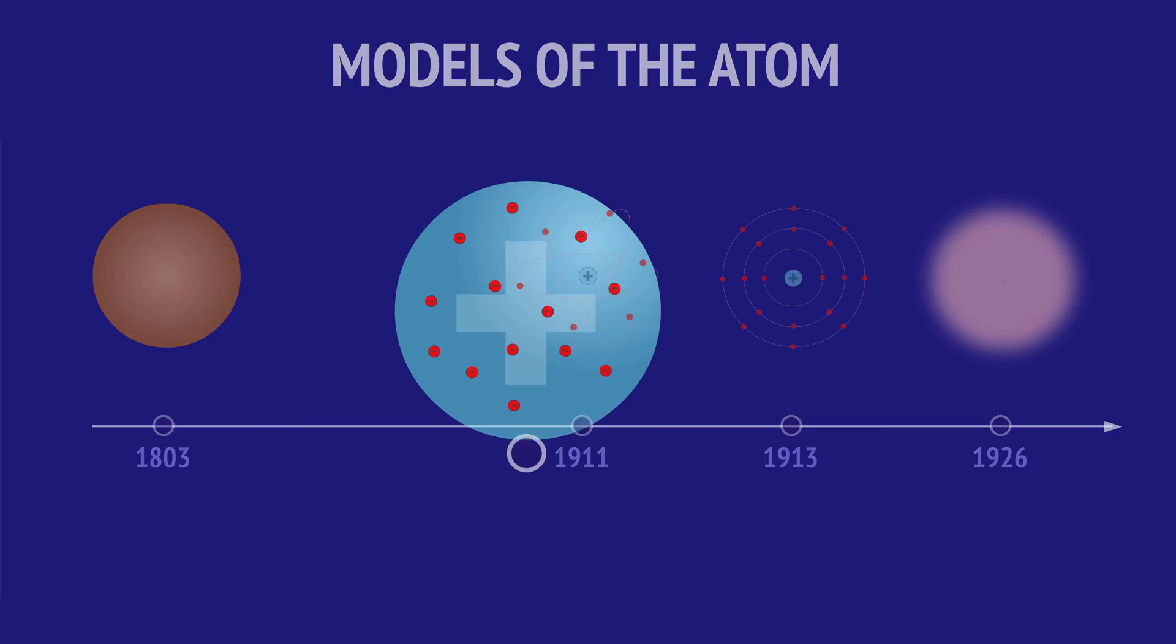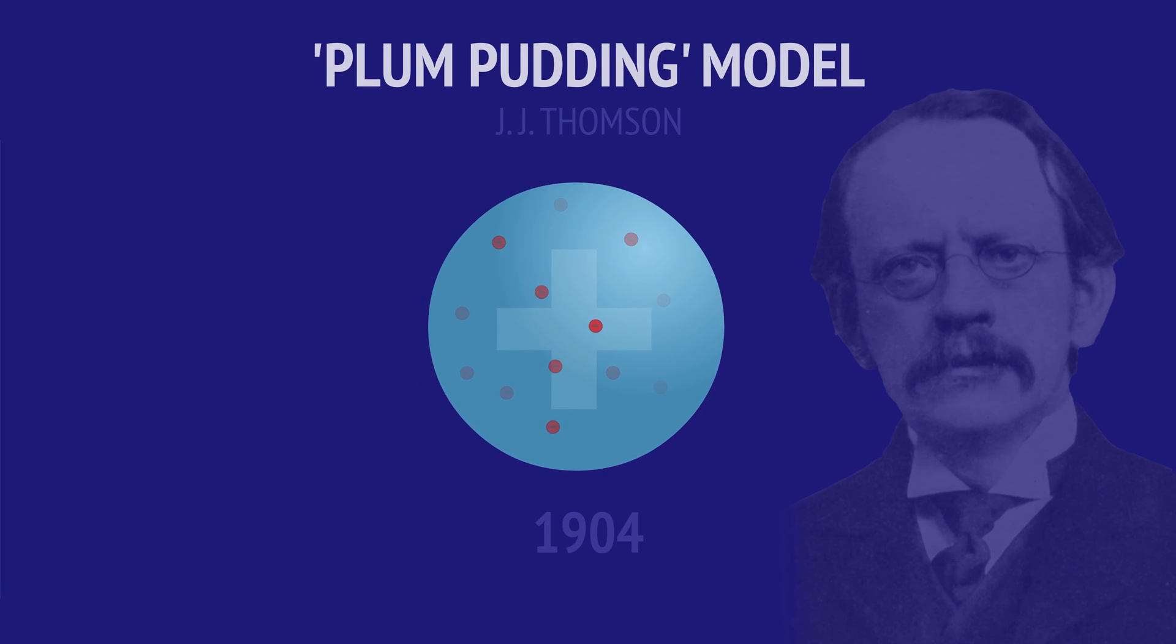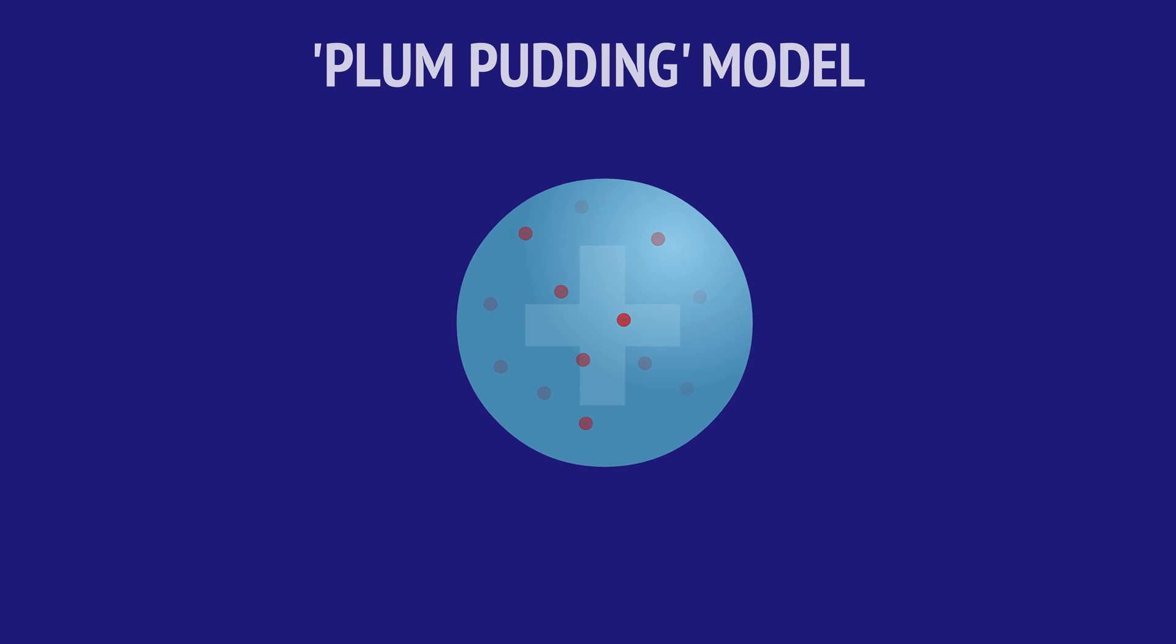In 1904, Thomson proposed the Plum Pudding Model, a sphere of positive jelly with embedded negative electrons, like pieces of fruit inside a pudding. But in 1911, a New Zealand physicist, Ernest Rutherford, would make an important discovery while testing Thomson's model of the atom.